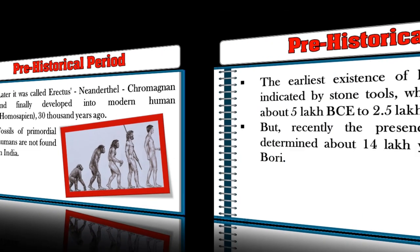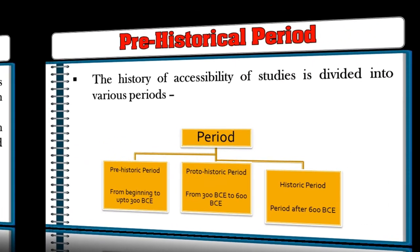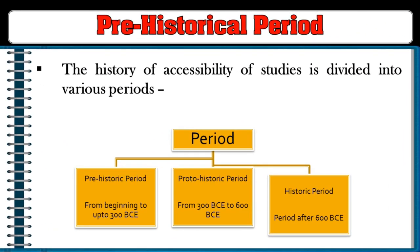Fossils of primordial humans are not found in India. The earliest existence of human beings in India is indicated by stone tools dated from about 5 lakh BC to 2.5 lakh BC. However, recently the presence of humans has been determined about 14 lakh years ago at a place called Bori. The history of studies is divided into prehistoric, proto-historic, and historic periods.